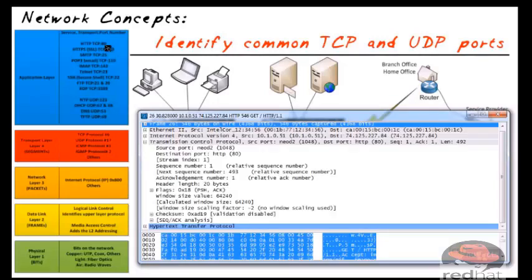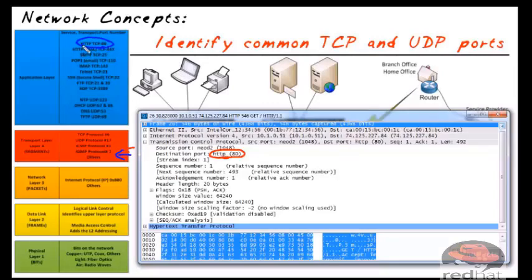Right here in the capture we have a destination port of 80 because it's an HTTP request. In the layer 4 TCP header, it contains information about the application layer data. It started as an HTTP request, requested the services of TCP, and is being sent to the well-known port of 80.